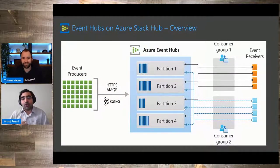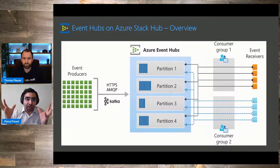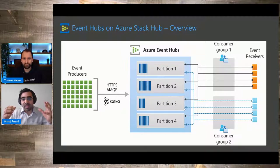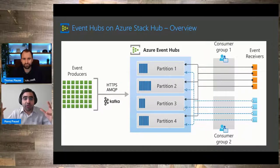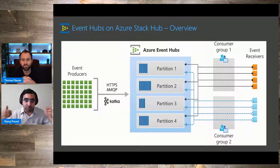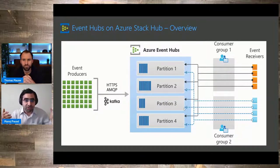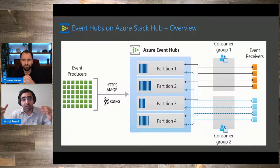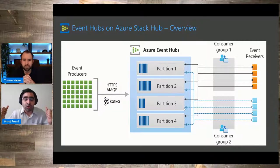When you look at Azure Event Hub, there are two important things. One is the producer — the one that produces all these events — and the other part is the consumer, which consumes all these events from Event Hub. Producers can use any of the three available protocols: HTTPS, AMQP, or Kafka. They can use any of these protocols to produce events. On the other hand, the receivers can also use any of these three protocols to consume events as well.